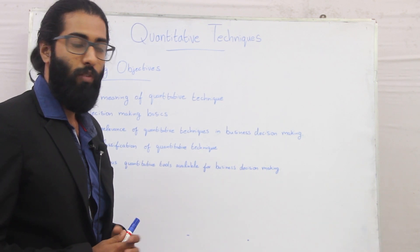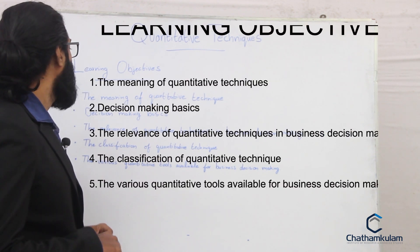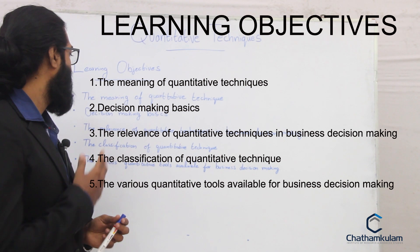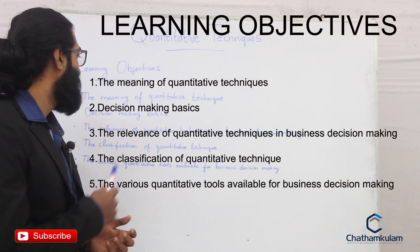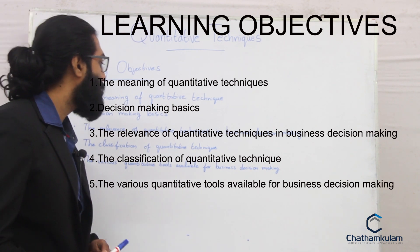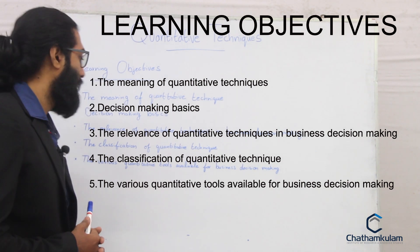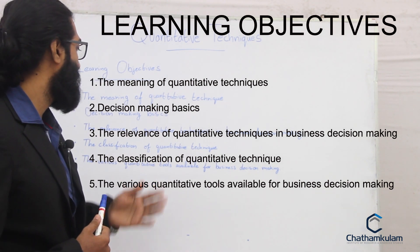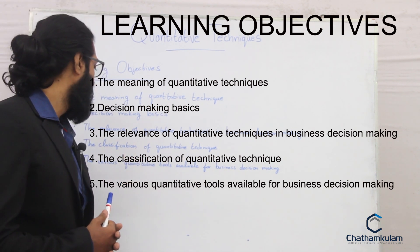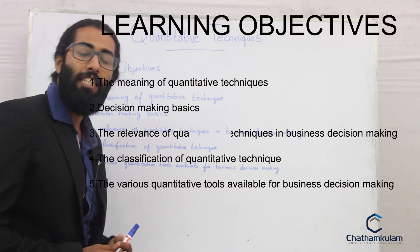First we will look at the various learning objectives of this class. First is the meaning of quantitative techniques. Next we will be discussing the decision making basics. The third one is the relevance of quantitative techniques in business decision making. The fourth point is the classification of quantitative techniques, and the last point will be the various quantitative tools available for decision making.